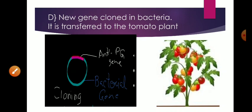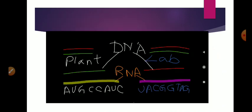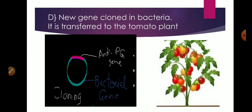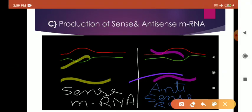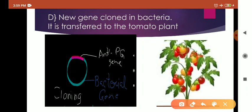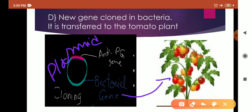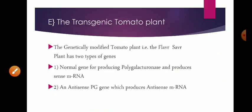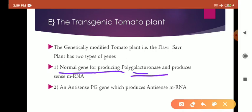Now when this antisense mRNA has been created, the gene has been created, the gene is cloned in a bacterial plasmid. This is a plasmid gene and it has been created in a bacterial plasmid, and it is being cloned, and after being cloned it is transferred to the plant. Now the genetically modified tomato plant, that is the Flavr Savr tomato plant, has both types of genes, the normal as well as the antisense. So they bear the normal gene that will produce polygalacturonase and they will also have the antisense mRNA.